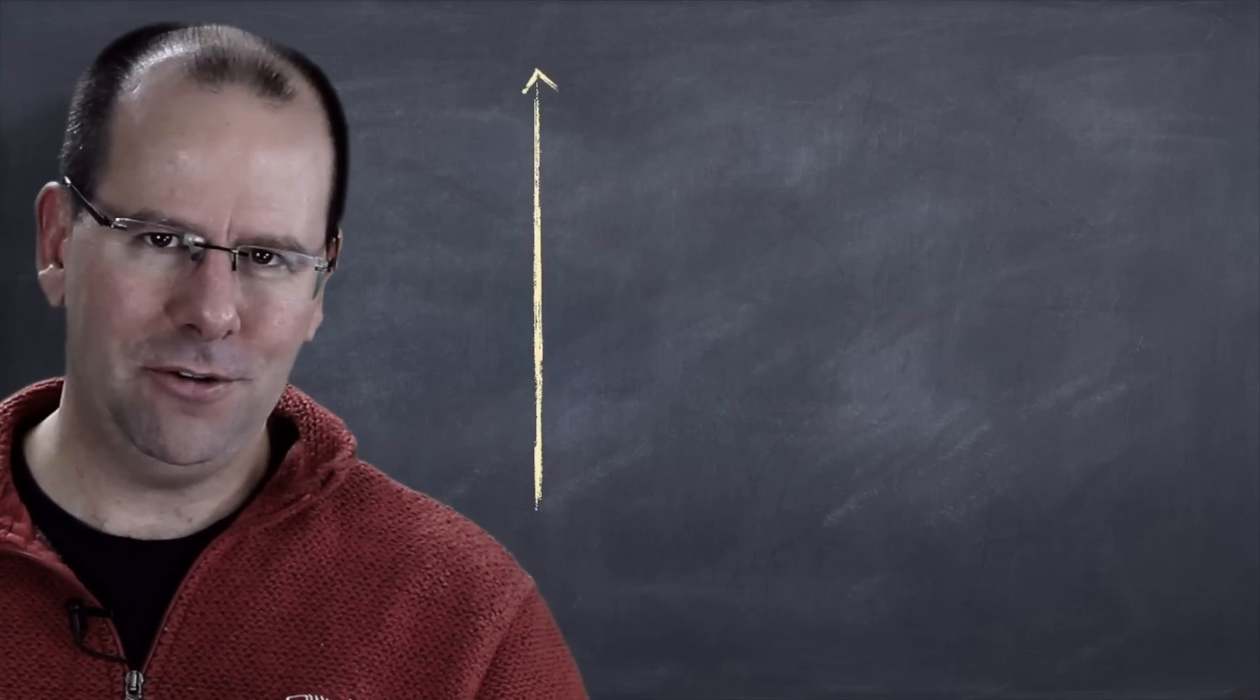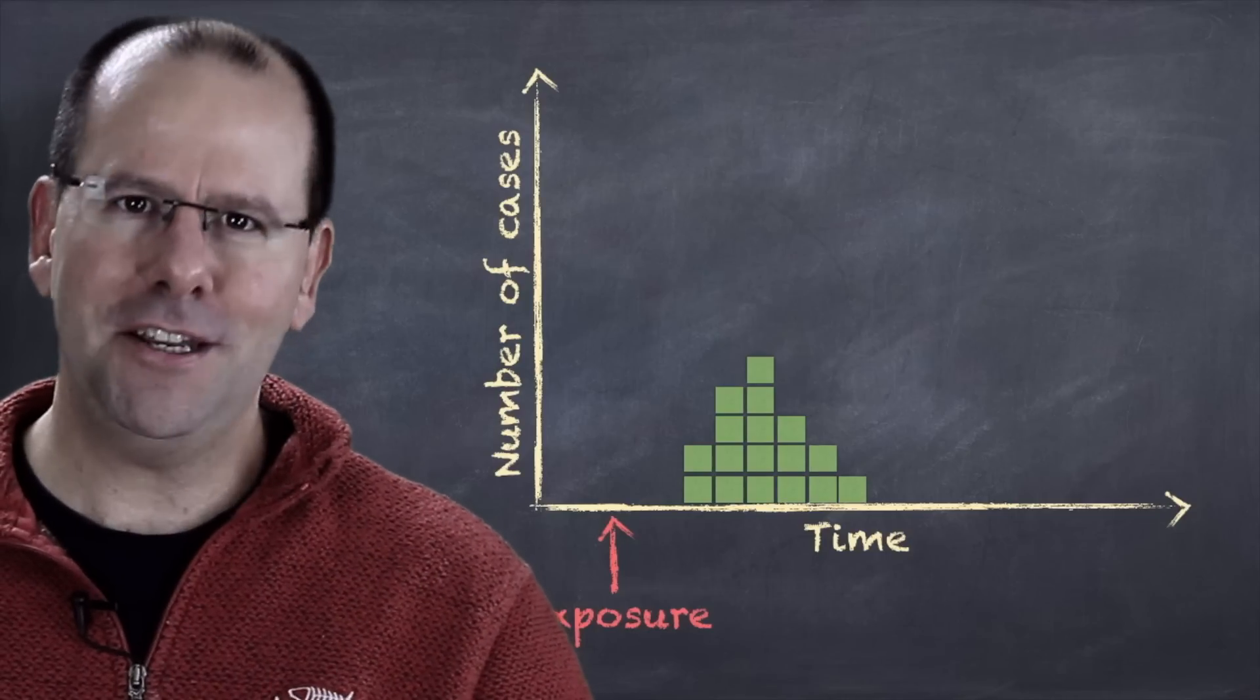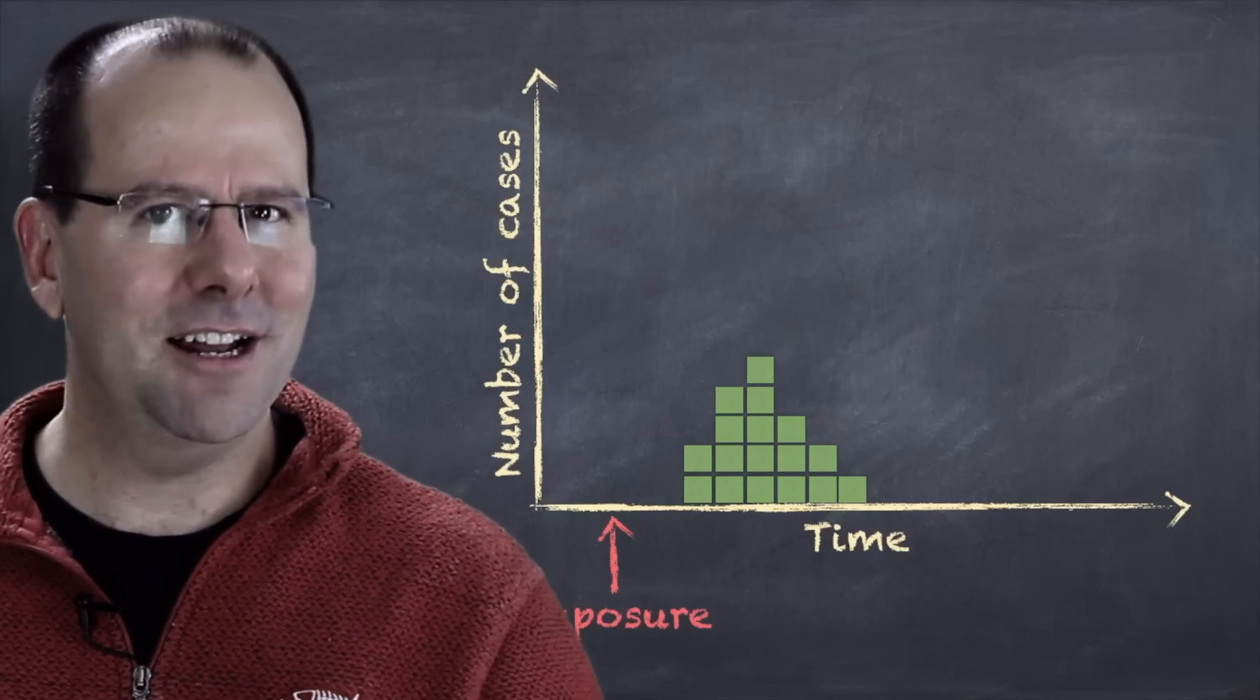So firstly, what is an epi curve or an epidemic curve? An epidemic curve is a visual representation of the onset of illness of cases in an outbreak over time.